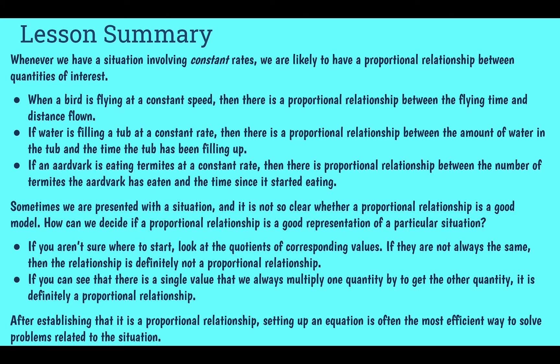In this lesson, we learned about constant rates. If we're dealing with constant rates, we're likely to have proportional relationships. For example, if a bird is flying at a constant speed, there's a proportional relationship between time and distance flown. If water is filling a tub at a constant rate, there's a proportional relationship between the amount of water and the time the tub has been filling up. Regardless of the situation, if something is going at a constant rate, it's probably a proportional situation.